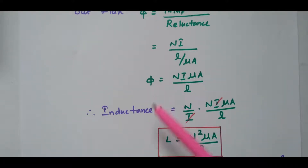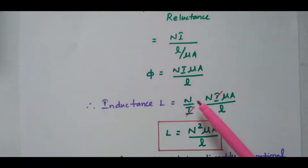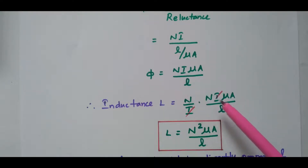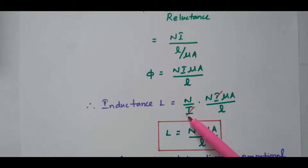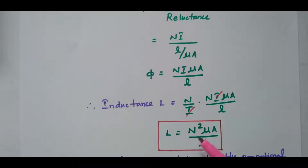Now we can substitute this flux value in the inductance formula. Inductance L equals N Φ by i. We replace Φ with N i μ A divided by l. The i cancels out, so we have N squared μ A divided by l. The inductance of a solenoid is N squared μ A divided by l. All the formulas used are general formulas, not specific to the solenoid.